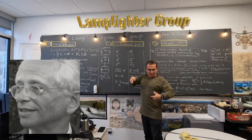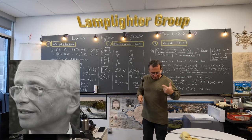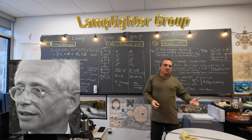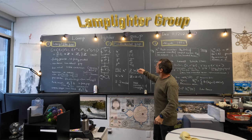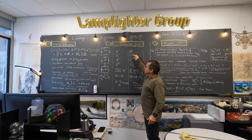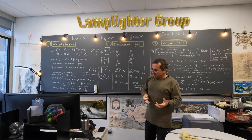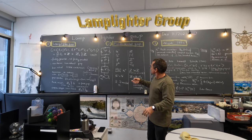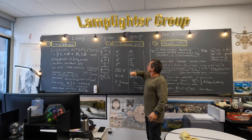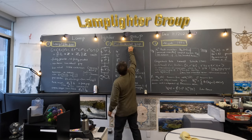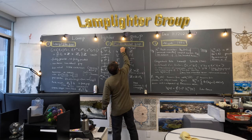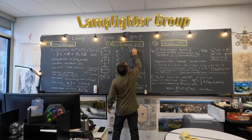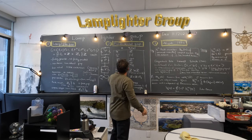You can look at the fundamental group of the circle — the fundamental group is Z, which tells you how many times you wind around. A sphere of dimension two or higher is simply connected. So here is the fundamental group: π₁(M), where M is the space.